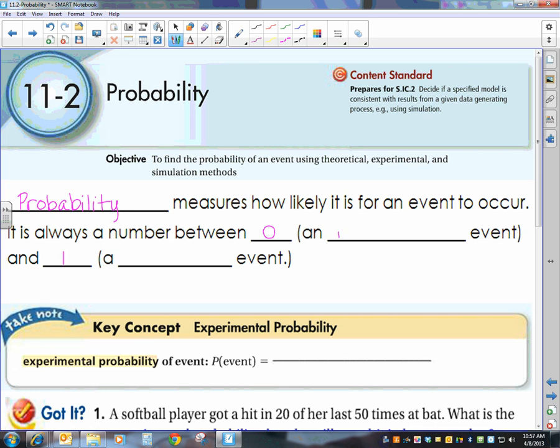0 would be an impossible event. What is the probability of cats and dogs falling from the sky? 0. And 1, a certain event, what is the probability the sun will rise every day? 1.